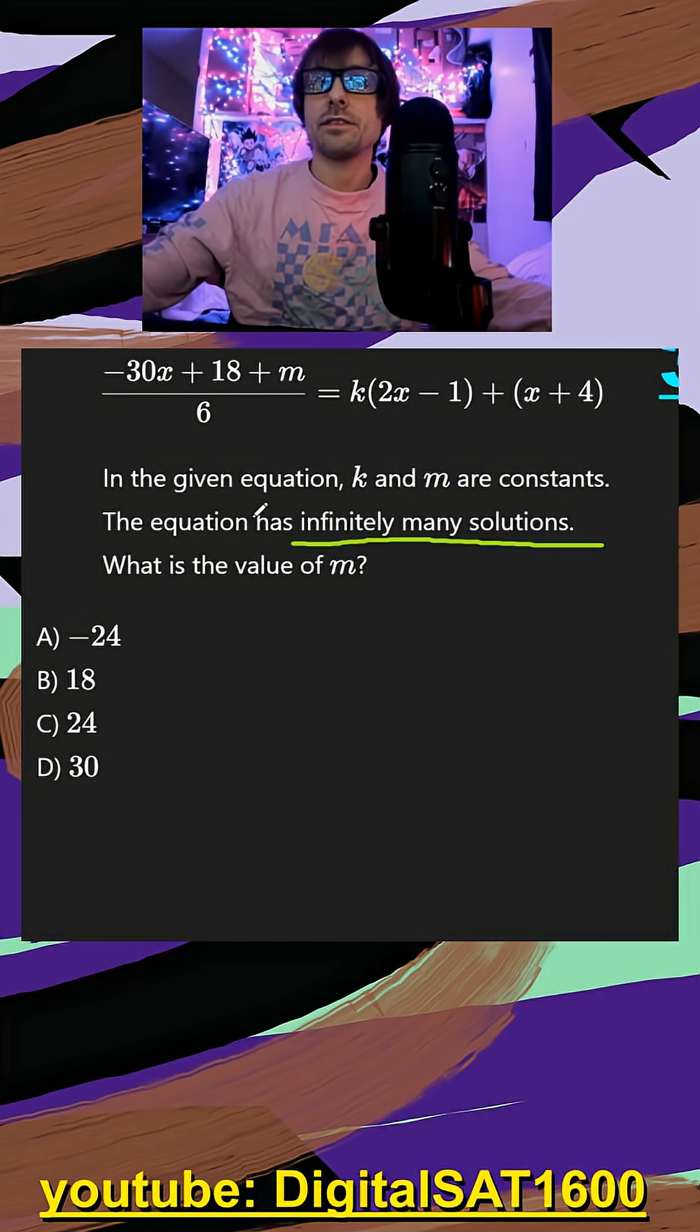So on the left, we just have to divide by 6. So that's going to be negative 5x plus 3 plus m over 6.